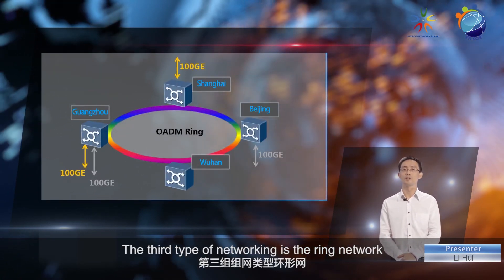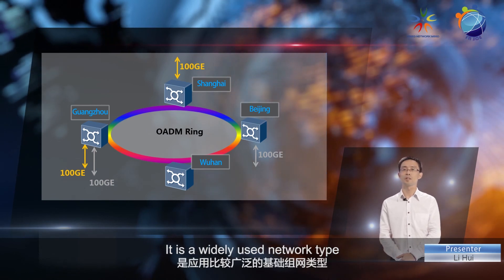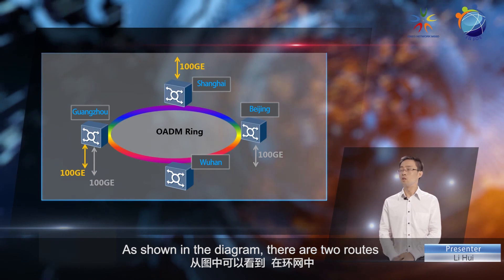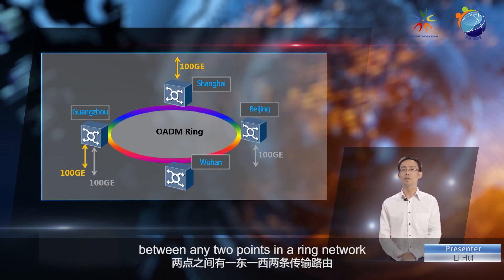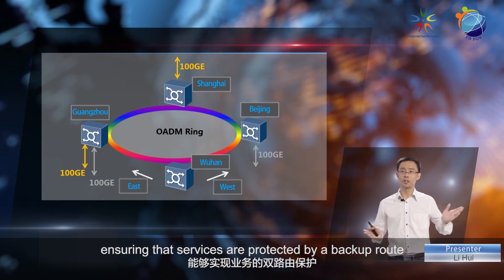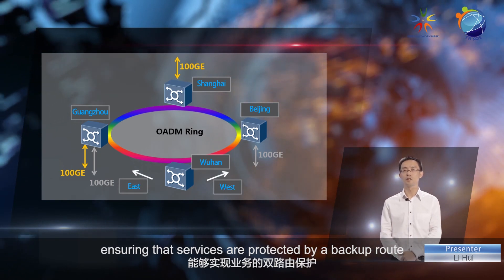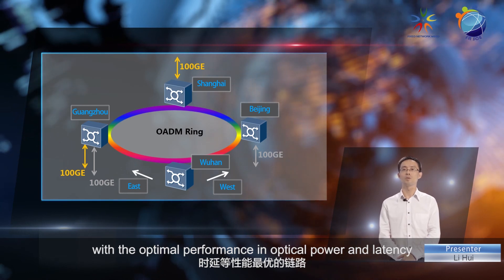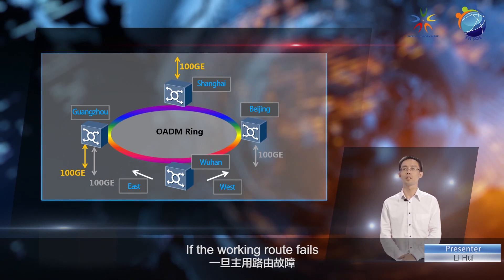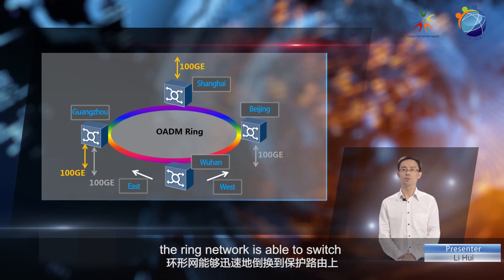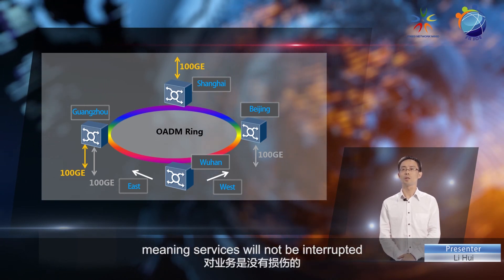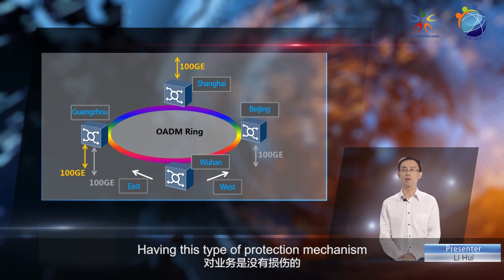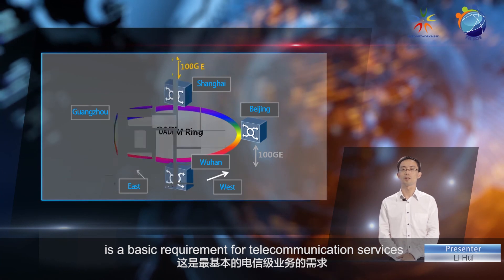The third type of networking is the ring network — a widely used network type which can be further adapted into a mesh network. As shown in the diagram, there are two routes between any two points in a ring network, ensuring that services are protected by a backup route. Normally, the working route is the link with optimal performance in optical power and latency. If the working route fails, the ring network is able to switch to the backup route within 50 milliseconds, meaning services will not be interrupted. Having this type of protection mechanism is a basic requirement for telecommunication services.